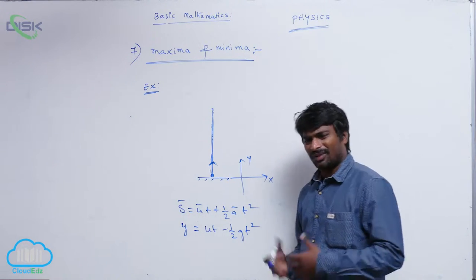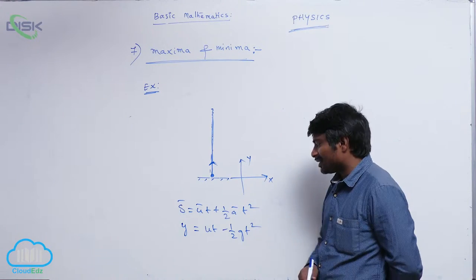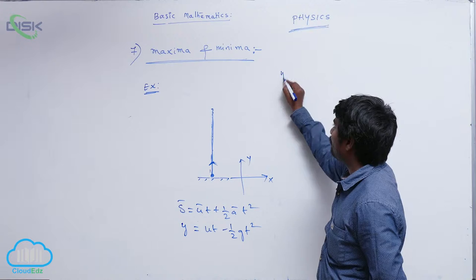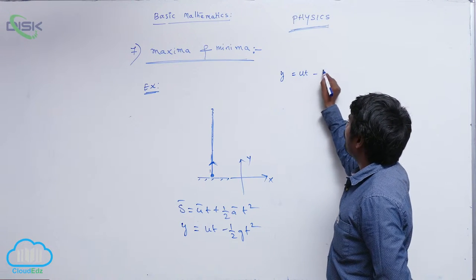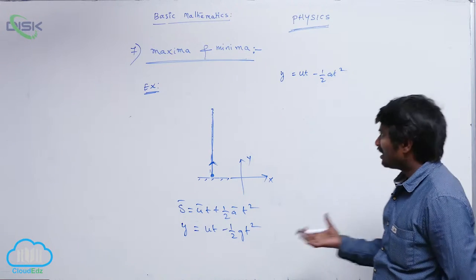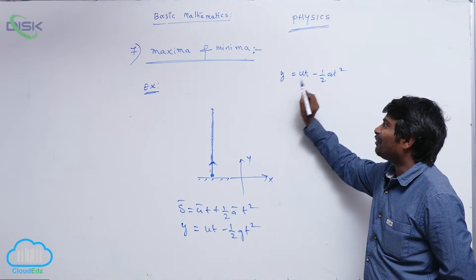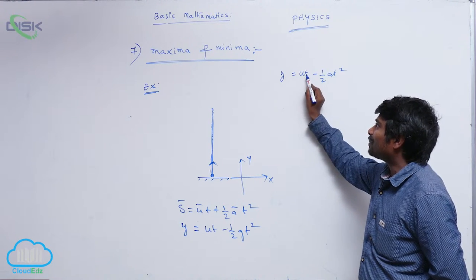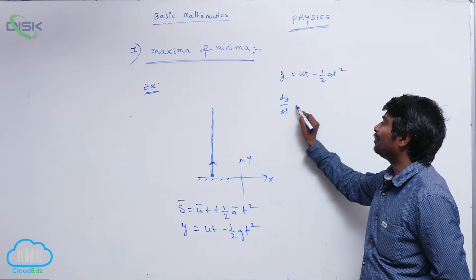Here y equals ut minus half gt square. So y is a function of time and it attains maximum value. If y attains maximum value, differentiation of y with respect to time will be zero. dy/dt will be zero.